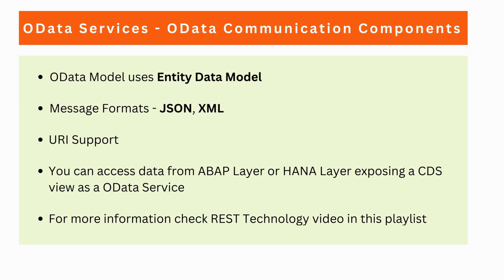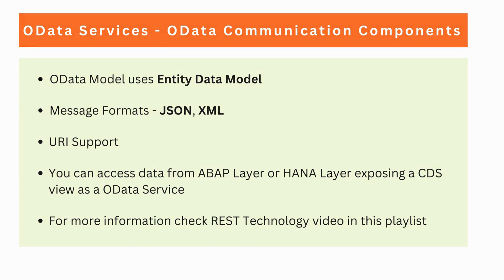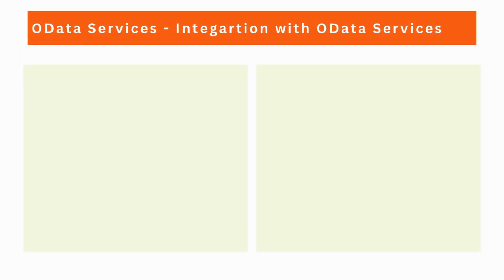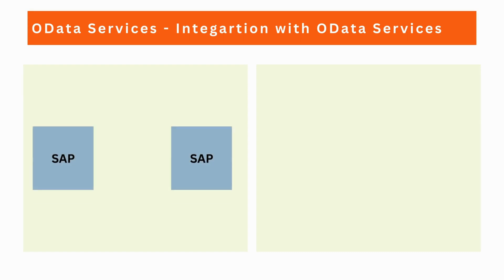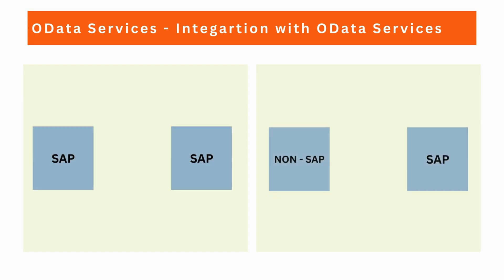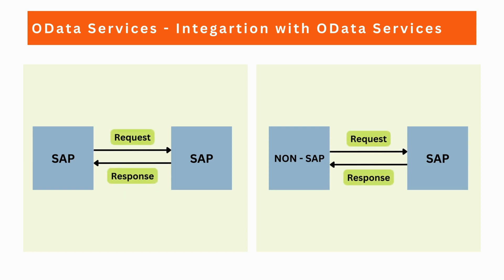Let's now look at different scenarios where we can use OData services. We can use OData services for integrating SAP-to-SAP systems or SAP-to-non-SAP systems. As you can see, it always works with a request and response type of communication.